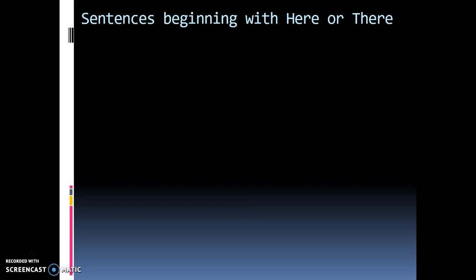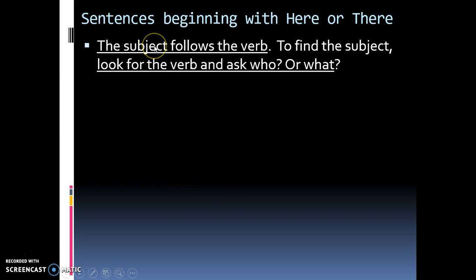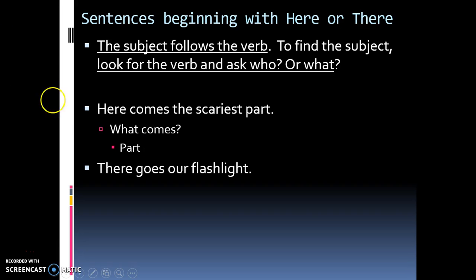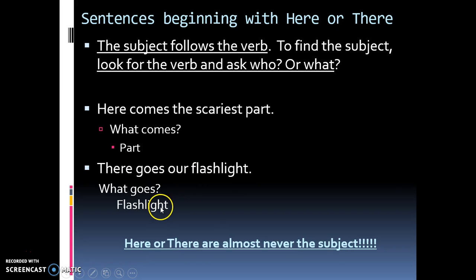Sentences that begin with here or there: here or there is almost never the subject. What you write down is: the subject follows the verb — look for the verb and ask who or what. For example, "Here comes the scariest part" — what comes? The scariest part. "Part" is your subject. "There goes our flashlight" — there goes what? Our flashlight. Therefore, "flashlight" is your subject. Here or there are almost never the subject.